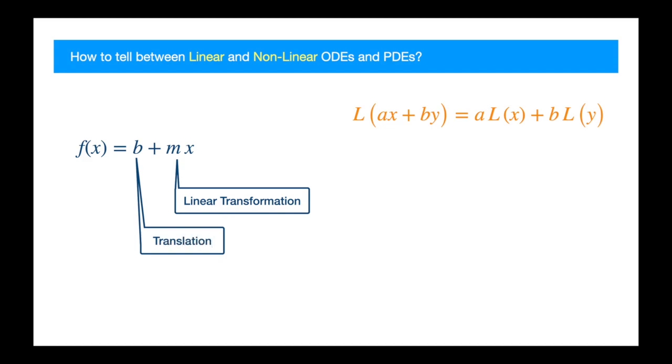The technical name for the combination is affine function as we saw in the Heston video. Ignoring the translation, we have a linear operator.